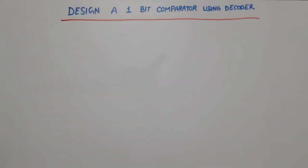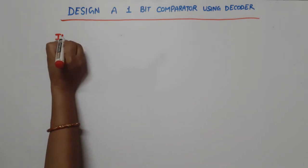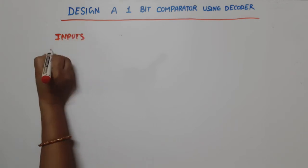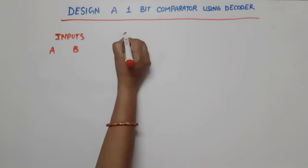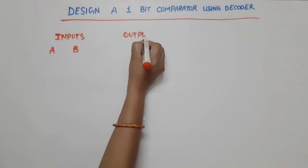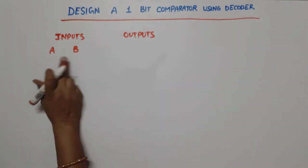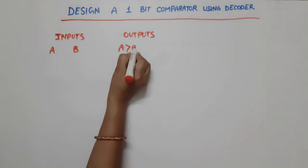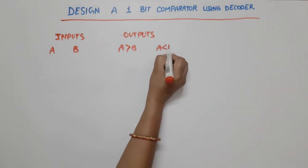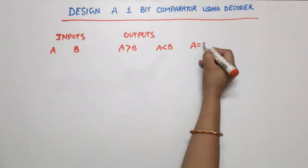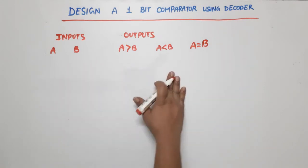Hello everyone. In this video lecture on digital electronics, I am going to design a one-bit comparator using a decoder. A one-bit comparator compares two one-bit numbers A and B. From the truth table, we have two inputs and three outputs: A greater than B, A less than B, and A equal to B.